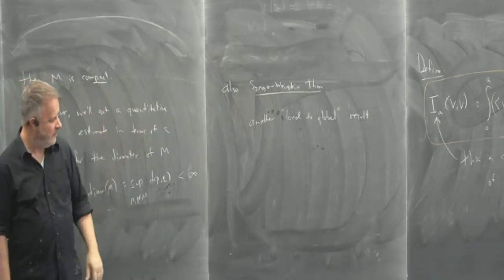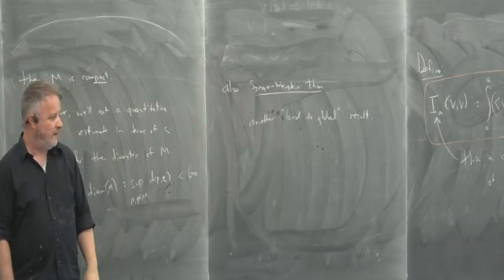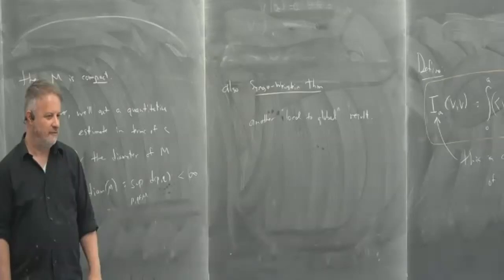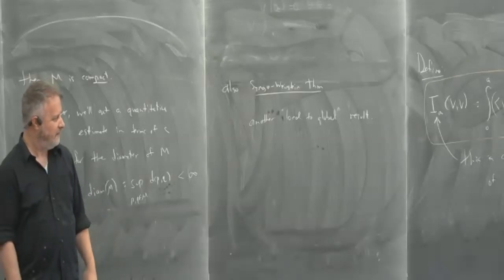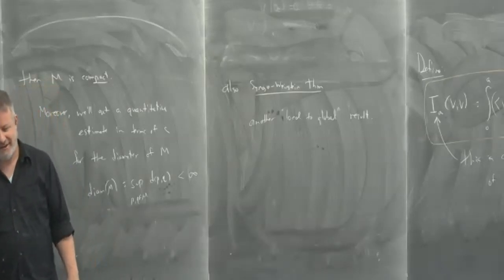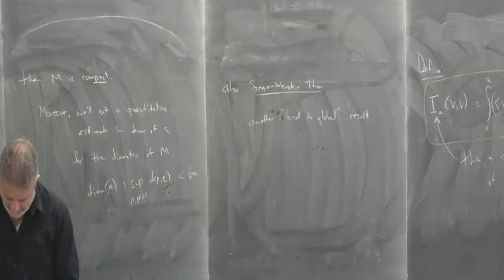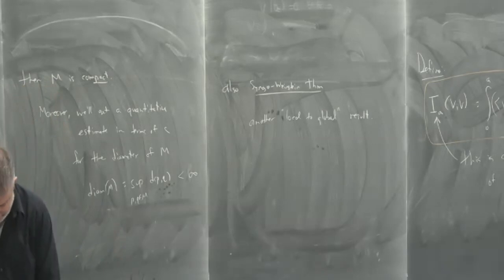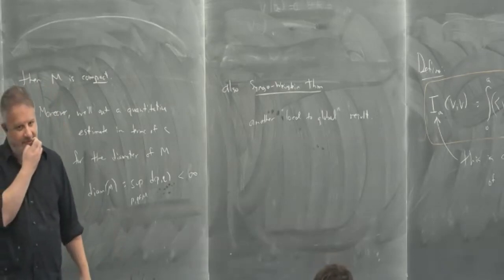That's the plan for Monday — the Bonnet-Myers and Synge-Weinstein theorems won't require as many long formula derivations as today. Then next Wednesday we move on to the Rauch comparison theorem, another application of the second variation formula. Assignment three is not due until a week from Friday — the 11th. Any questions?